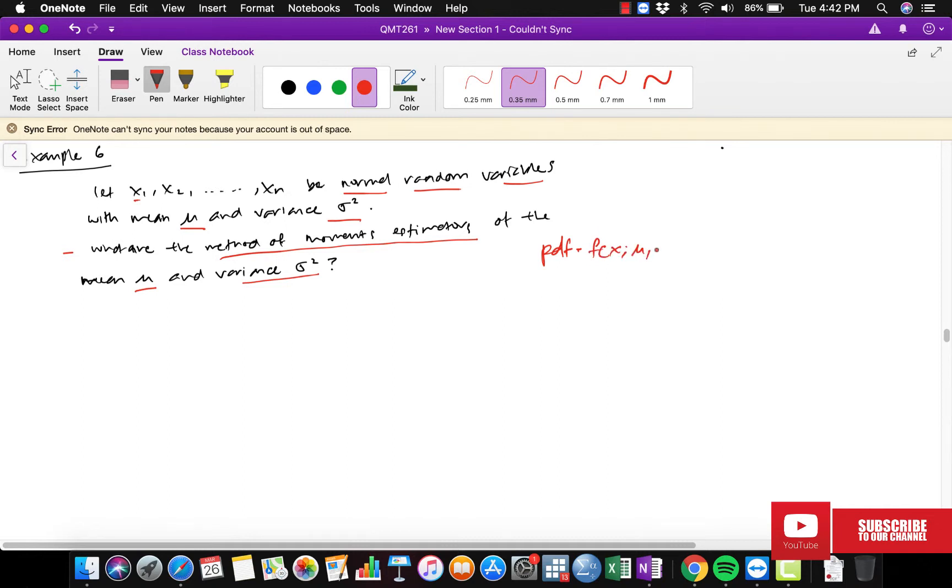The distribution PDF of normal distribution f(x; mu, sigma squared) should be equal to 1 over 2 pi sigma squared taking a square root, exponential negative 1 over 2, x minus mu divided by sigma, then taking a square over here.